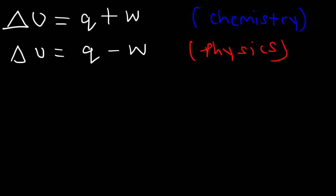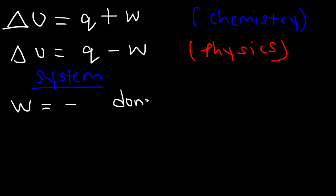In physics the equation is a bit different: Delta U = q − w. The reason for the difference is the point of view taken by each science. In chemistry, we take the system's point of view, while in physics and engineering, the viewpoint of the surroundings is used. In chemistry, w is negative when work is done by the system, because the system has to expend energy to do work and the internal energy of the system decreases.